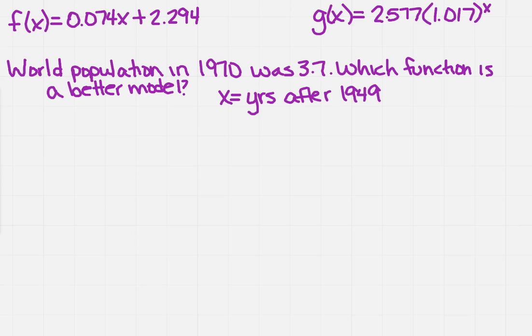How am I going to do that? Well, I need to know what f of x is, and f of x has to do with the number of years, because I've got x in there. I have to do the current year, 1970, and it says the years after 1949. So I need to subtract those to find out how many years have gone by. That's 21 years.